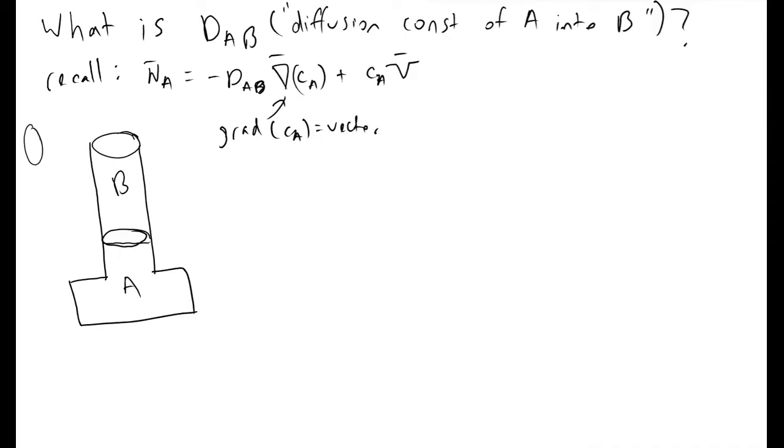You'll have outside some kind of fan blowing air across or over your Arnold cell. Because of that, it sweeps away A as it diffuses into B. This is an Arnold cell.